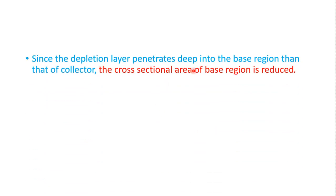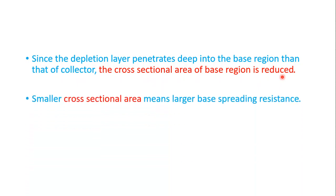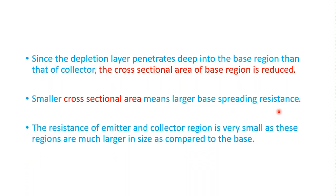Since the depletion layer penetrates deep into the base region, the cross-sectional area of the base region is reduced. Smaller cross-sectional area means larger base spreading resistance. The resistance of the emitter and collector regions is very small, as these regions are much larger in size and are heavily doped compared to the base.